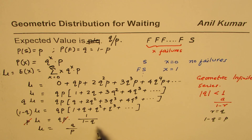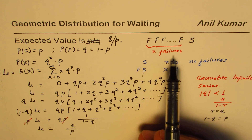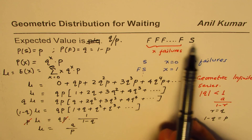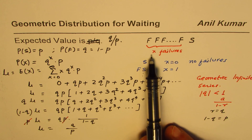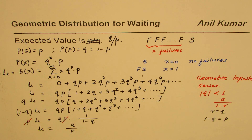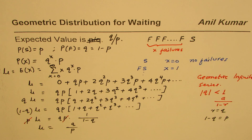It is important to note that in this geometric distribution X is the number of failures. We will also look at geometric distribution for successes, which is slightly different because we treat it as X plus 1 trials — asking in how many trials do we get a success. There is a slight difference between the two formulas which all students should note. I'm Anil Kumar, I hope that helps — thank you and all the best.